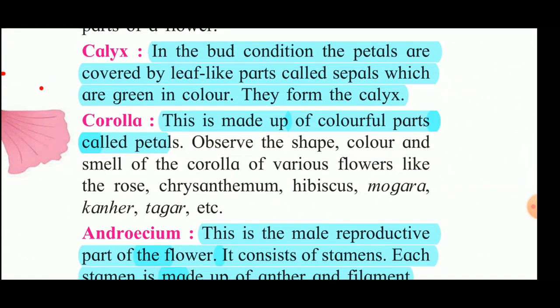In the bud condition, the petals are covered by a leaf-like part called sepals, which are green in colour. They form the calyx. Then the corolla is made up of colourful parts called petals.